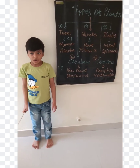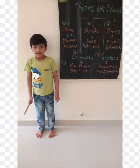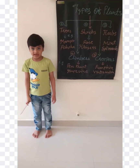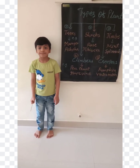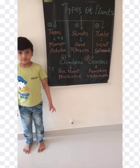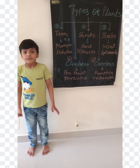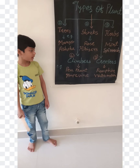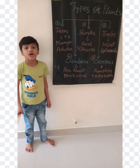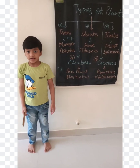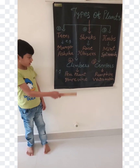The third type is herb. Herbs are weak plants. They have a soft green stem. They live for a few months. For example: mint, spinach, and coriander.